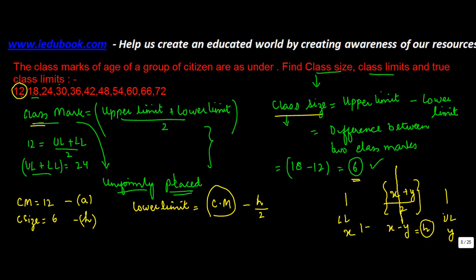Then, the class mark, which is the midpoint, is how much? This is the difference between this midpoint and this is H by 2, and this is also H by 2. Because this is the lower limit, you assign a minus sign here. Because this is the upper limit, you assign a positive sign.